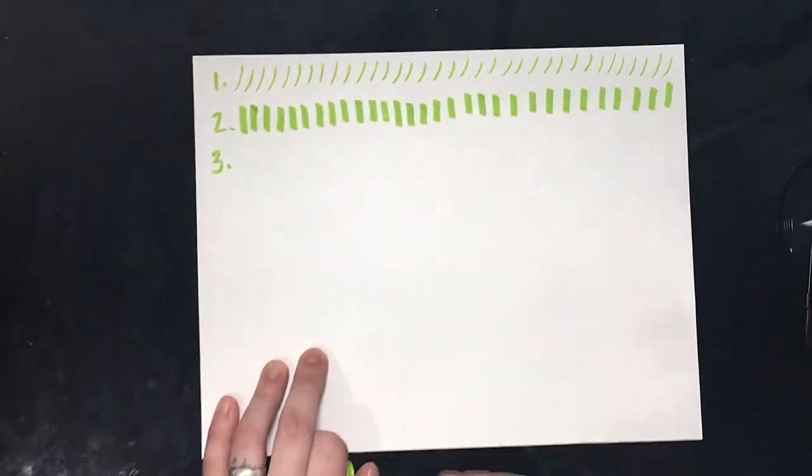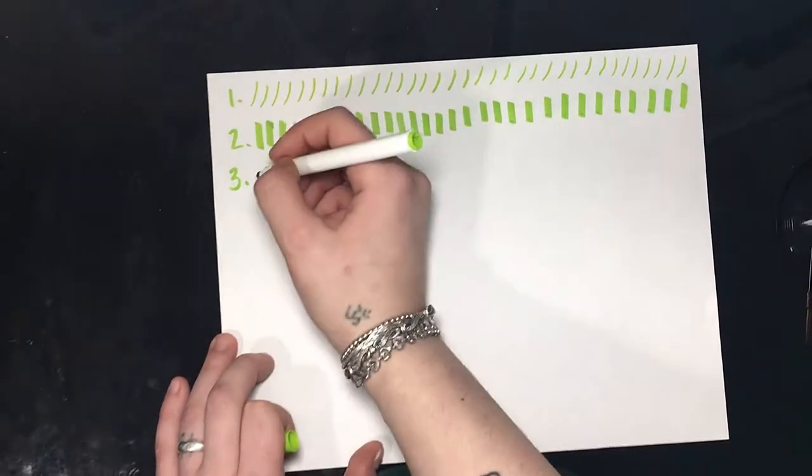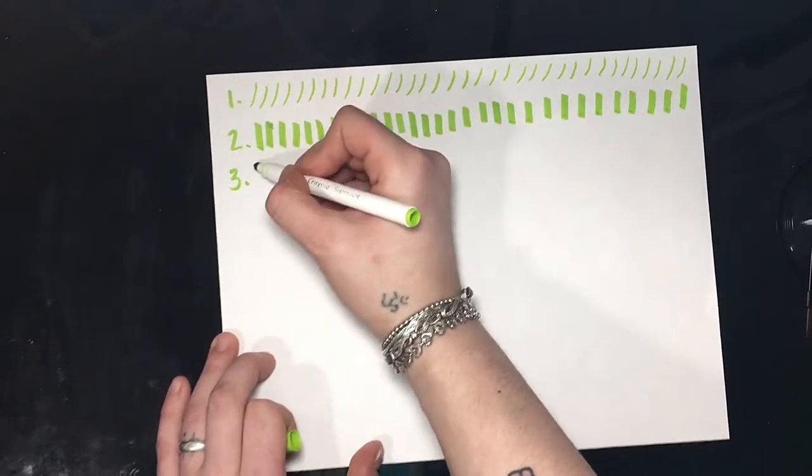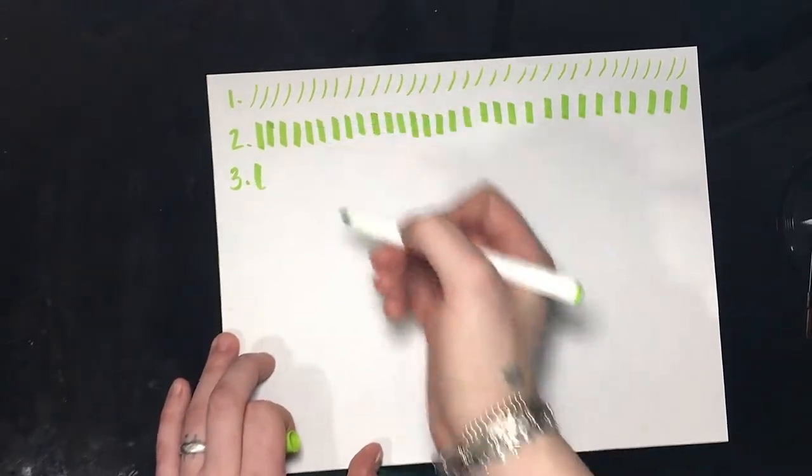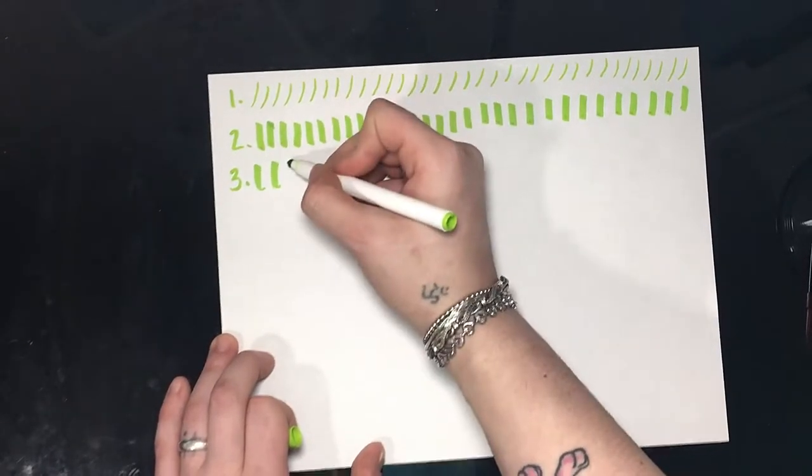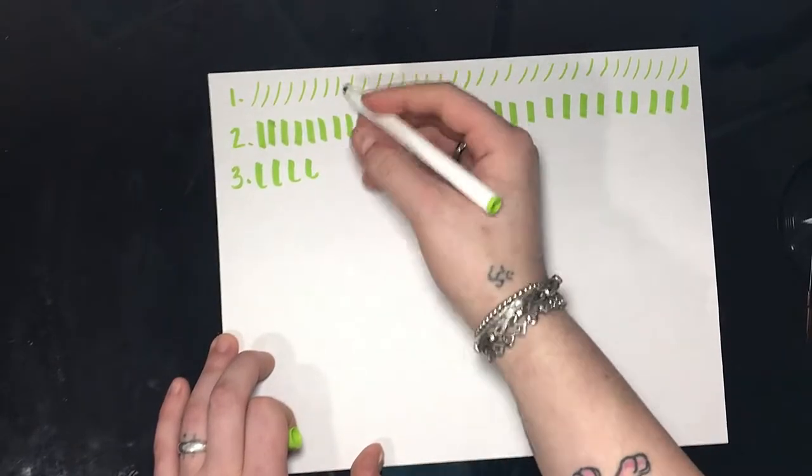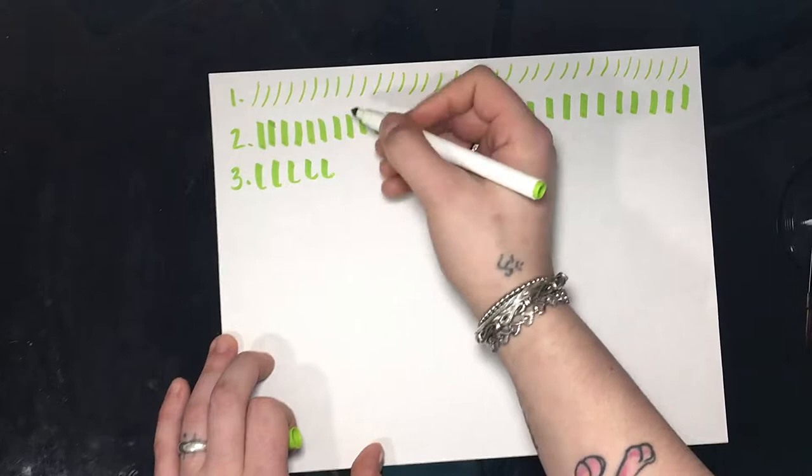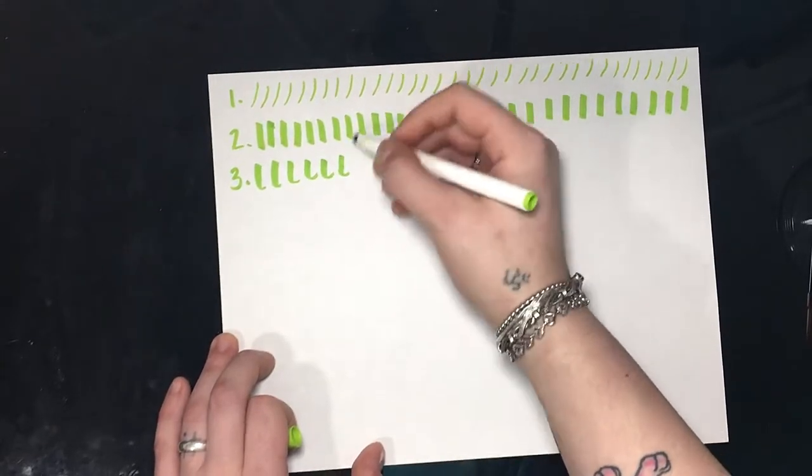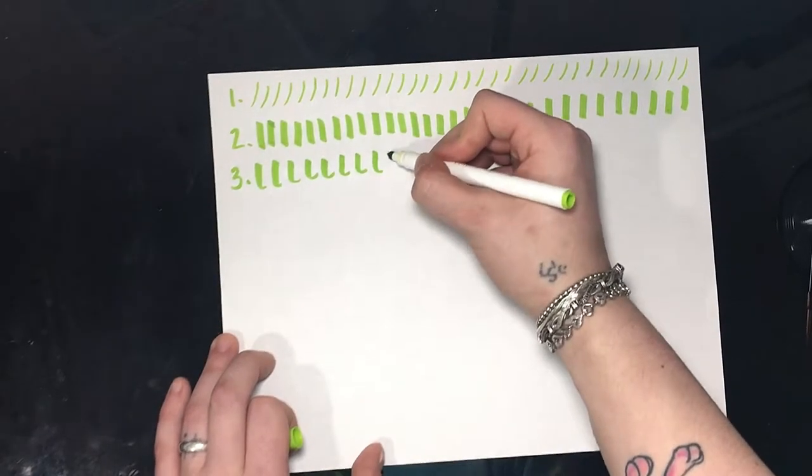Now the third thing that you can do is to sort of make like a downstroke with a tail and you want the tail to be thin because this would be your exit stroke. So when you finish a letter and you're going to go into another one, this is one you would practice to do that.